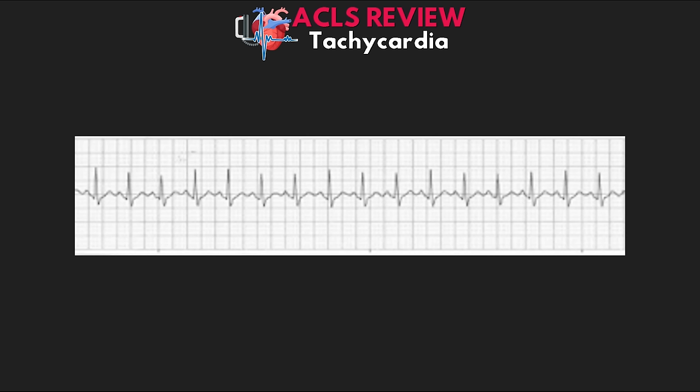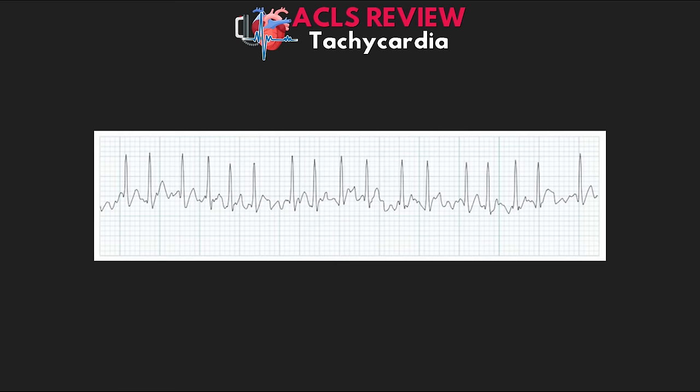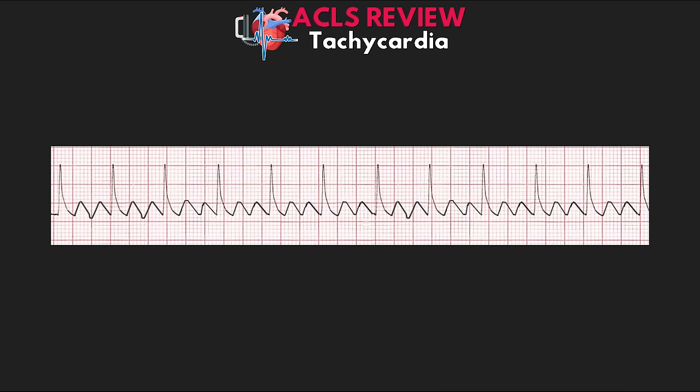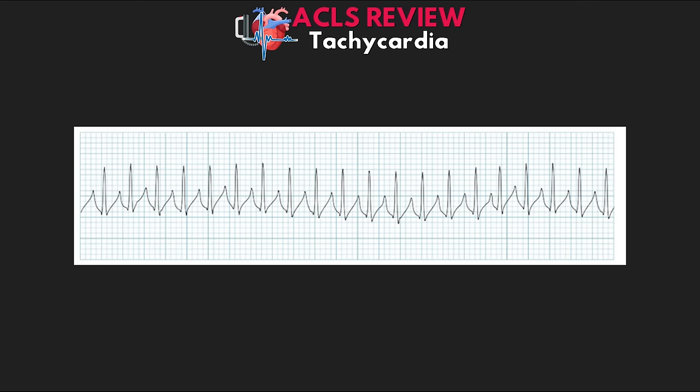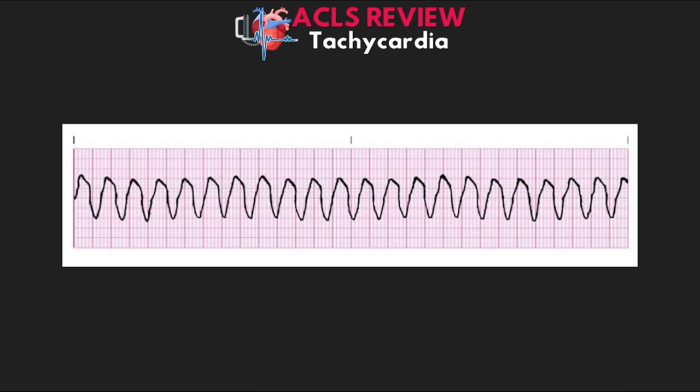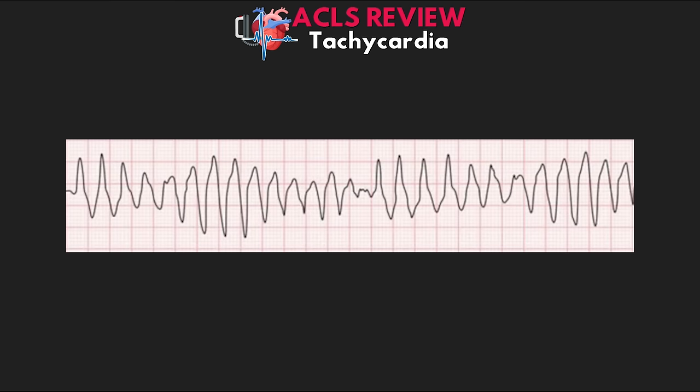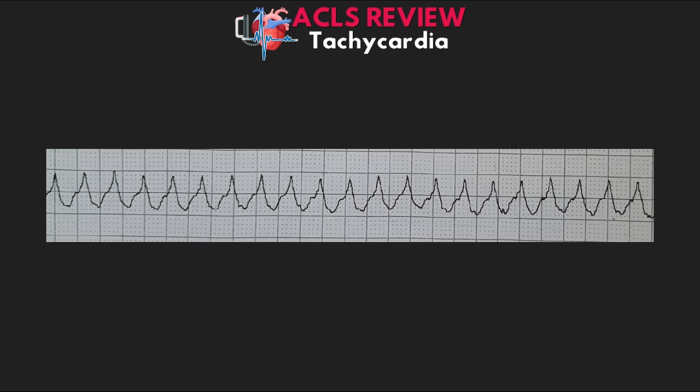Just like with the other algorithms, it's going to be important for you to be able to identify the potential rhythms associated with unstable tachycardia. Those rhythms are sinus tachycardia, atrial fibrillation or AFib, atrial flutter or AFlutter, reentry supraventricular tachycardia or SVT, monomorphic VTAC, polymorphic VTAC, and wide complex tachycardia.